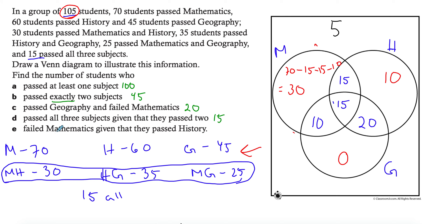Failed mathematics given that they passed history — these are conditional probabilities, explained in another video, but you can use the Venn diagram directly. Given they passed history, your pool is everyone in the history circle. From that pool, those who failed maths are not in the maths circle — that's the 20 and the 10, giving a total of 30 people.